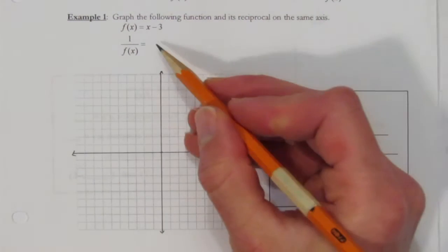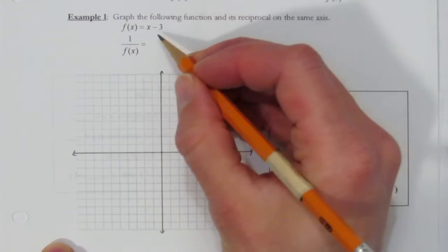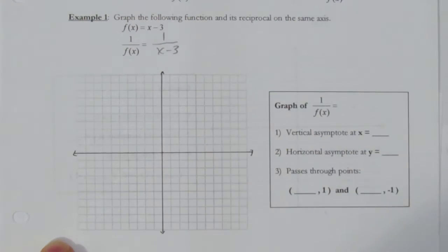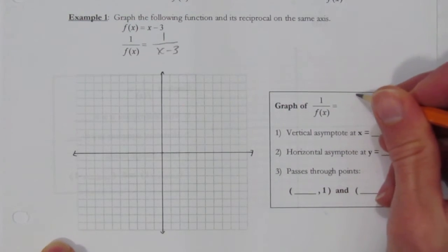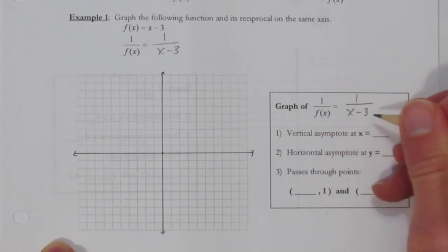The line we're given is y equals x minus 3, or f(x) equals x minus 3. We want to graph the reciprocal 1 over x minus 3. There's a little box down here where we'll do some work.